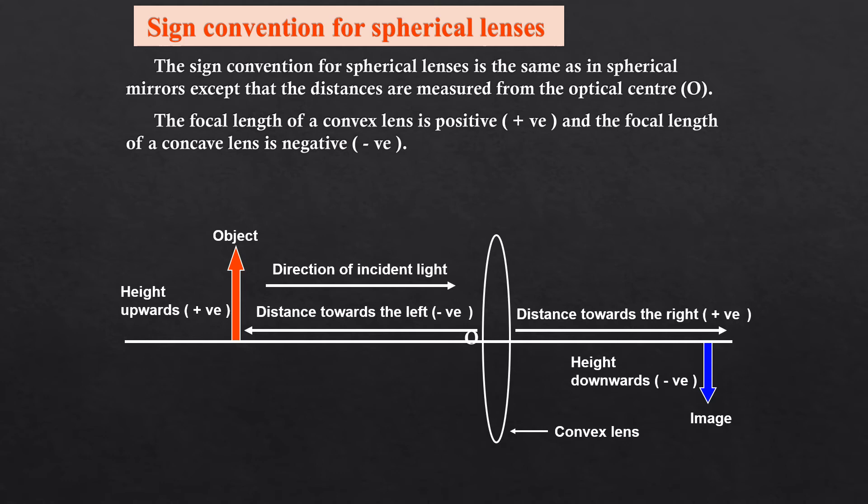Distances from the object, the ray of light incident is towards right direction of incident light. Distances along the direction of incident light, that is distances towards the right, are positive. Distances against the direction of light, that is distances towards the left, are taken as negative. The height upwards to the object is positive. The height downwards to the image is negative. So it is almost the same, the reference is that only, instead of a mirror you have a lens.